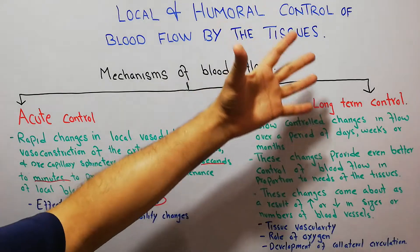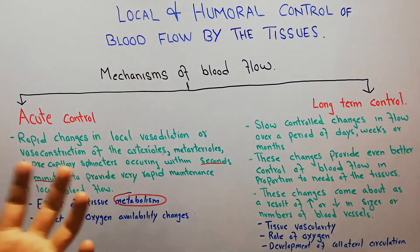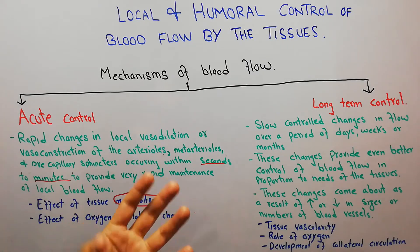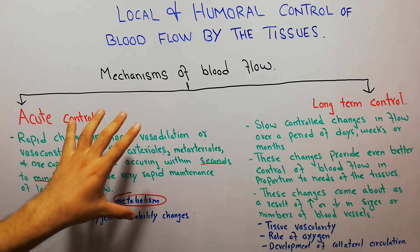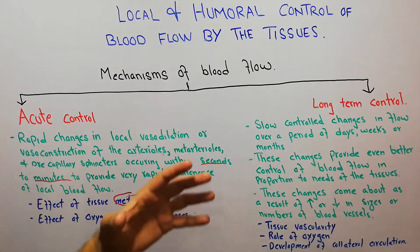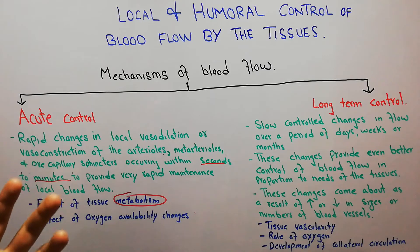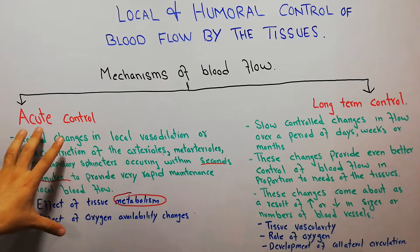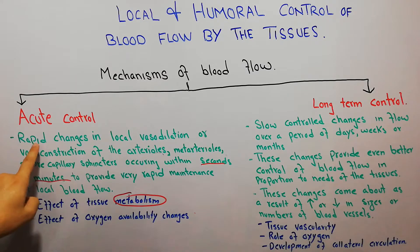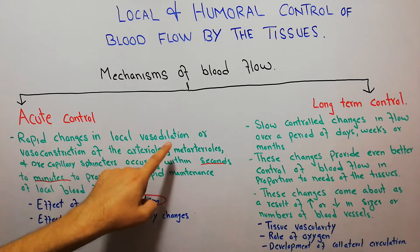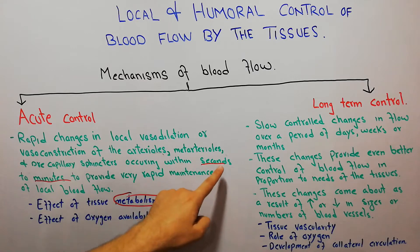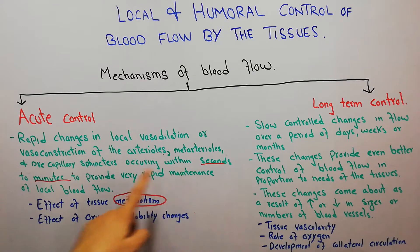We will discuss humoral control in coming lectures, but now we are discussing the local mechanisms used by tissues to control their own blood flow — how muscles, kidneys, liver, and skin control their own blood flow. There are basically two mechanisms: the first is acute control, which involves rapid changes in local vasodilation or vasoconstriction of the arterioles, metarterioles, and pre-capillary sphincters, occurring within seconds to minutes.